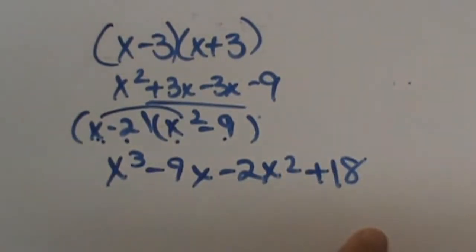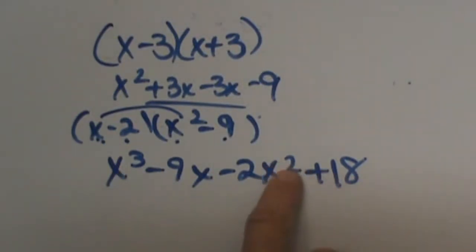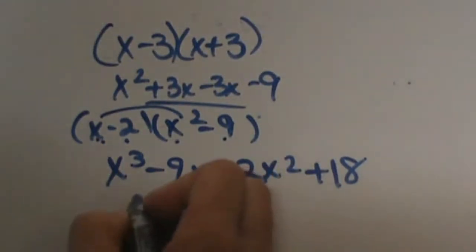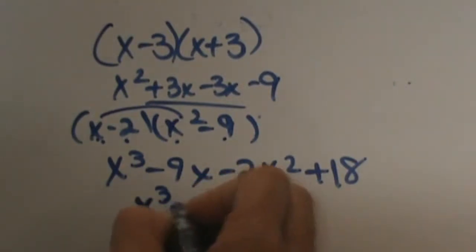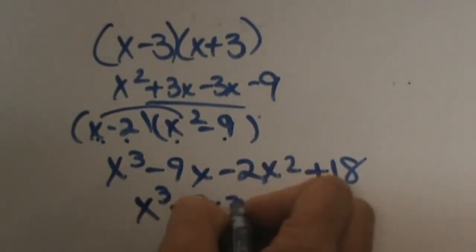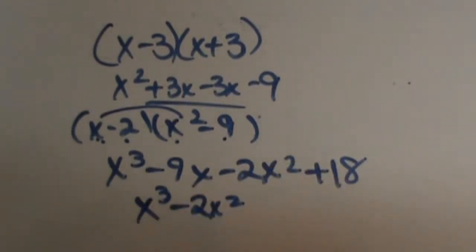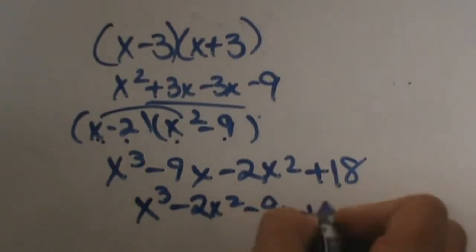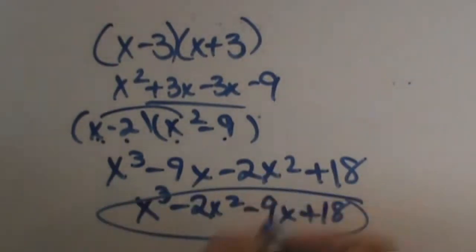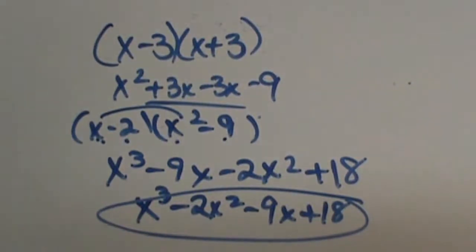Now this is close but this actually isn't the correct answer. We need to put it in descending order — notice that squared term is back here. So I'm going to bring down x cubed, then write negative 2x squared, then negative 9x, and then 18. Now that's in the correct form. So there's my answer.